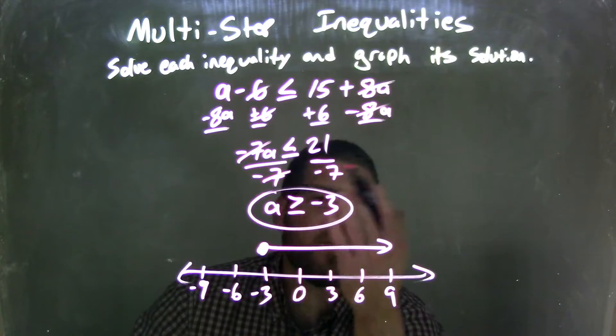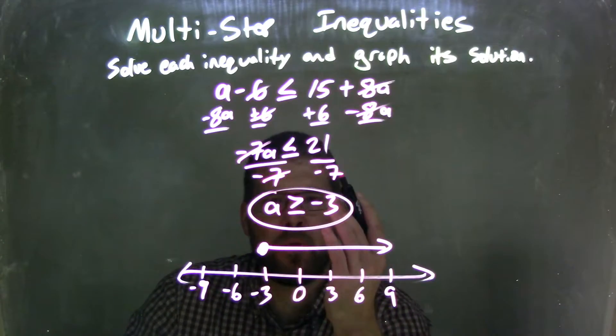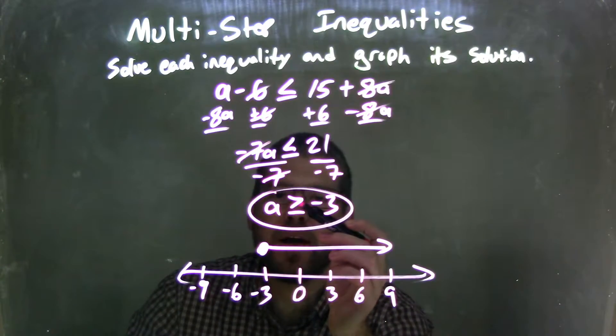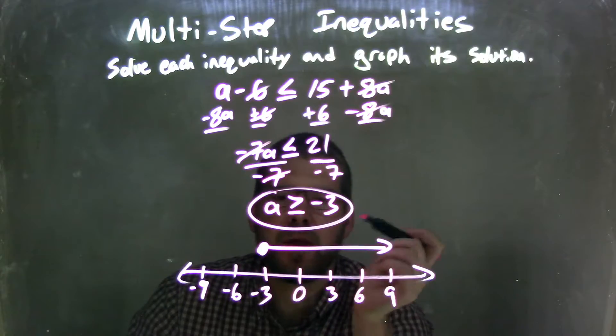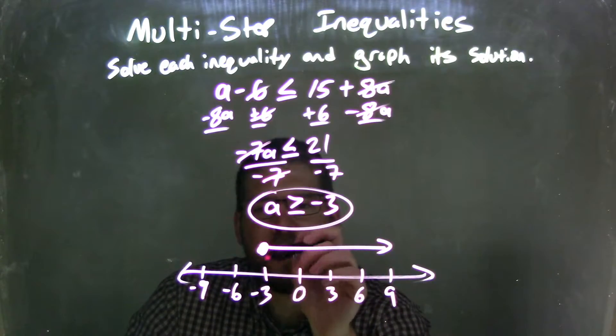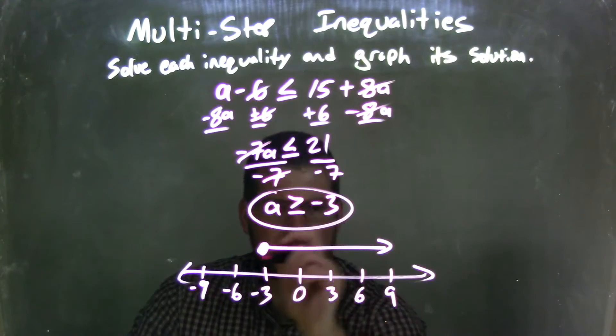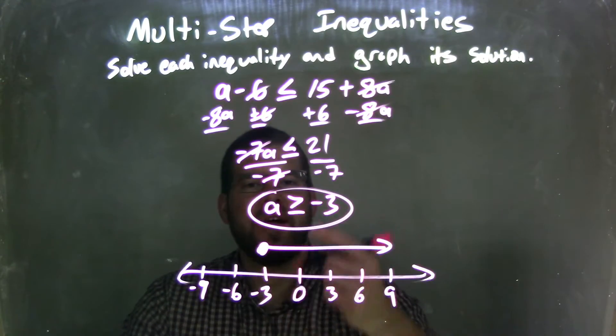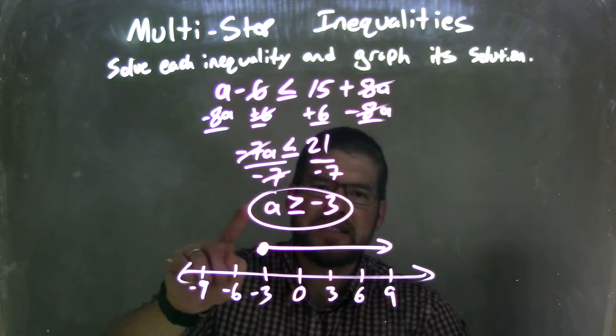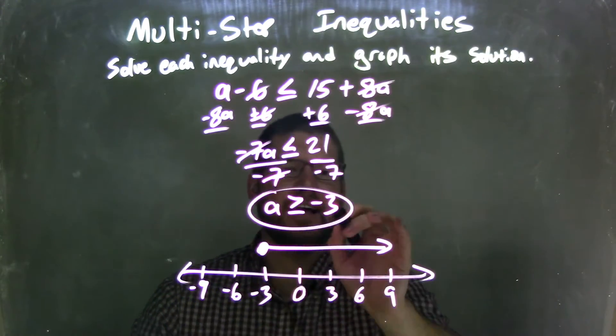But since I divided by a negative over an inequality, we need to flip the inequality, giving me a is greater than or equal to negative 3. The equal to sign when I graph it gives me a closed circle, and the greater than sign makes me put my arrow to the right. So now we have a graph that represents and matches our final answer, which is a is greater than or equal to negative 3.